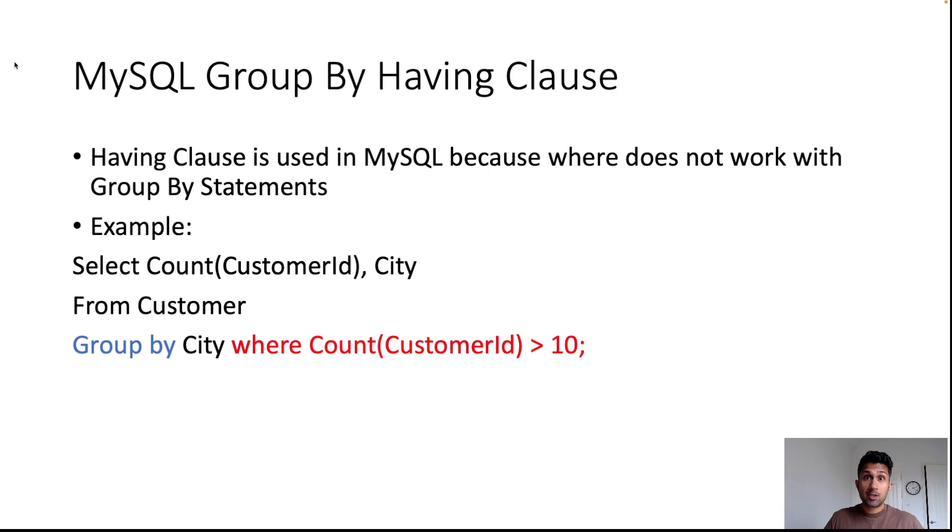In the previous lecture we learned how to count customers in a particular city, or count customers by cities. We used this command where we said SELECT COUNT(CustomerId), City FROM Customer GROUP BY City, and that gave us information like Delhi had two customers, Ottawa had two customers, Johnsonville had one customer, and so on.